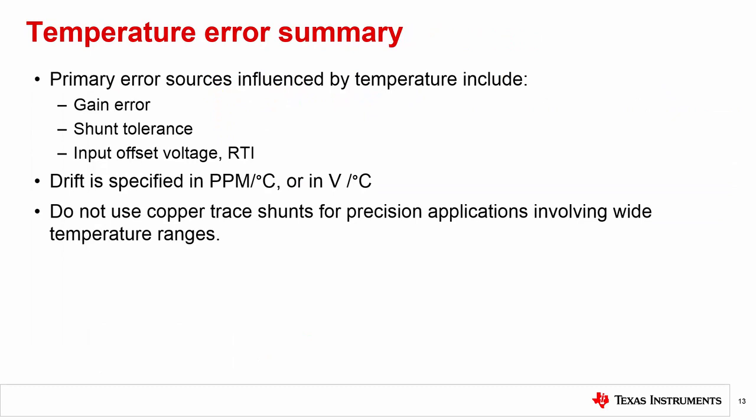Let's take a minute to summarize what we learned in this video. Temperature affects gain error, shunt tolerance, and input offset voltage. Drift specifications often have either PPM or some unit of voltage per degree C. Lastly, avoid copper traces for precision measurements.